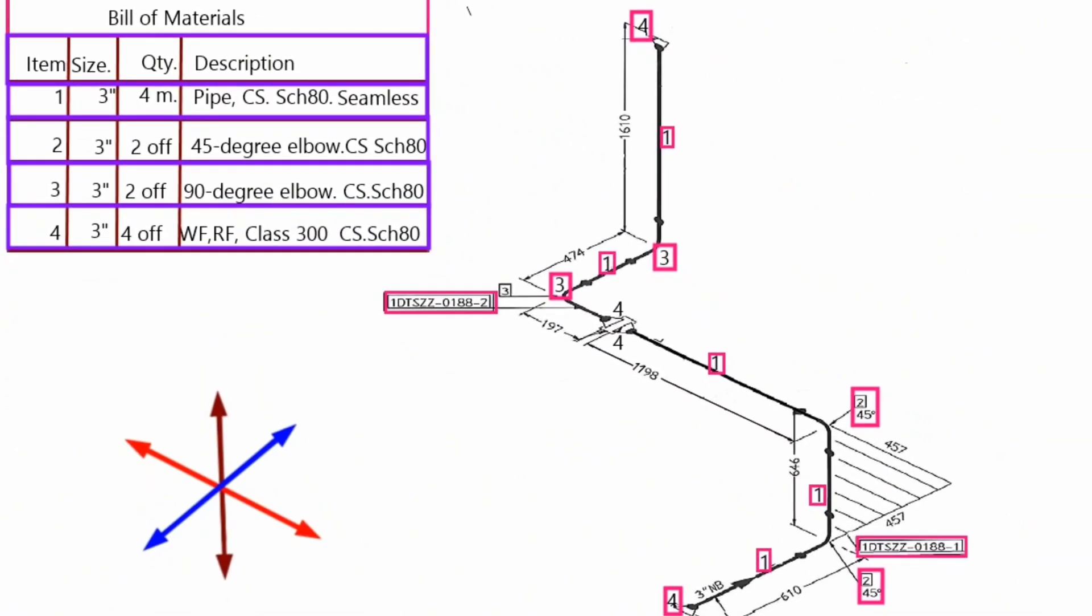The reading bill of materials in this piping isometric drawing successfully completed. Now, let's learn arrows showing the directions in the piping isometric drawing. Knowing this direction well helps us read the piping drawings.